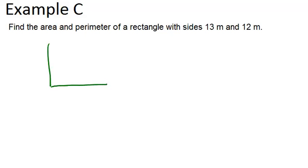So our rectangle has length 13 meters and 12 meters. So that means the other 2 sides are also 13 meters and 12 meters. The perimeter would just be all 4 sides added up.